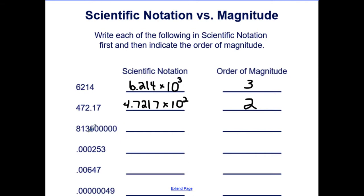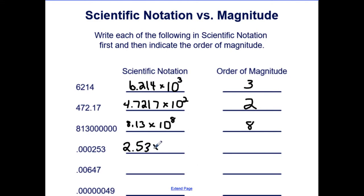Eight hundred thirteen million in scientific notation would be 8.13 times ten to the eighth, making it an order of magnitude of eight. The next number would be 2.53 times ten to the negative fourth, making its order of magnitude negative four — you include the sign.